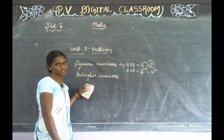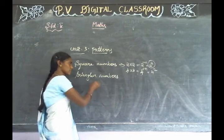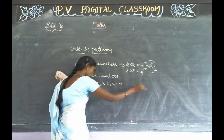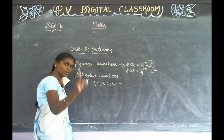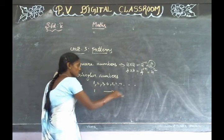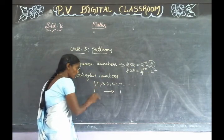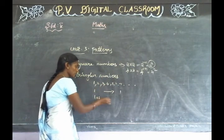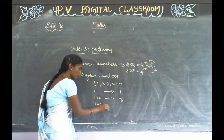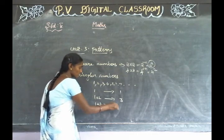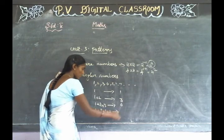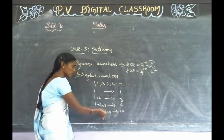Next is triangular number. Triangular number uses natural numbers: 1, 2, 3, 4, 5, 6, 7 and so on. The first triangular number is 1. Next: 1 plus 2 is 3. Next: 1 plus 2 plus 3 is 6. Next: 1 plus 2 plus 3 plus 4 is 10. This is the pattern for triangular numbers.